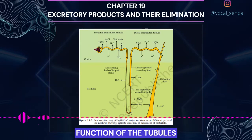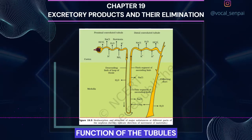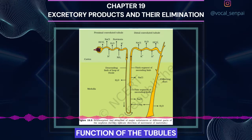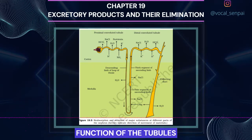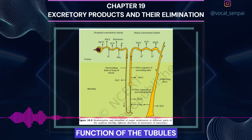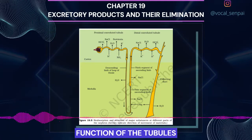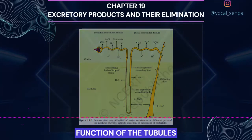Distal Convoluted Tubule, DCT. Conditional reabsorption of Na+ and water takes place in this segment. DCT is also capable of reabsorption of HCO3- and selective secretion of hydrogen and potassium ions and NH3 to maintain the pH and sodium-potassium balance in blood. Collecting Duct. This long duct extends from the cortex of the kidney to the inner parts of the medulla. Large amounts of water could be reabsorbed from this region to produce a concentrated urine. This segment allows passage of small amounts of urea into the medullary interstitium to keep up the osmolarity. It also plays a role in the maintenance of pH and ionic balance of blood by the selective secretion of H+ and K+ ions (figure 19.5).